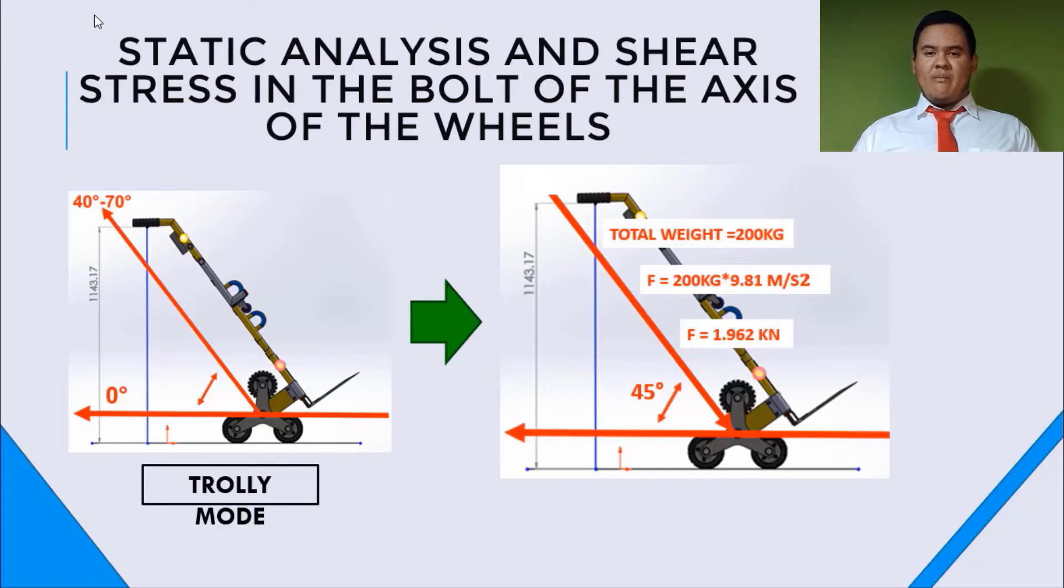The total weight that we selected is 200 kilograms. This weight compared to force in newtons is 1.962 kilonewtons. So we need to divide it in two because the trolley in this mode has two separate wheels in three groups. So this will affect the middle of the real total force.